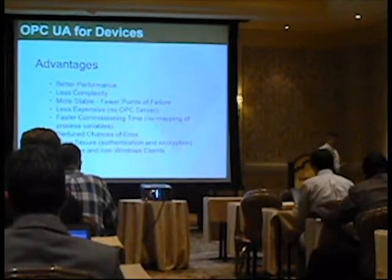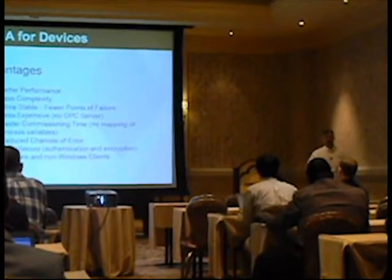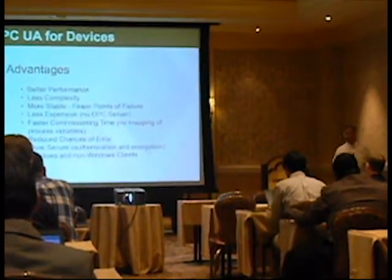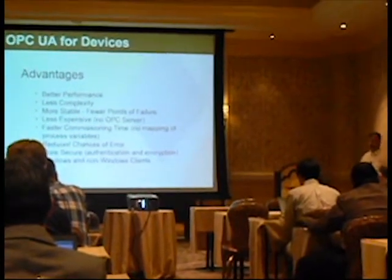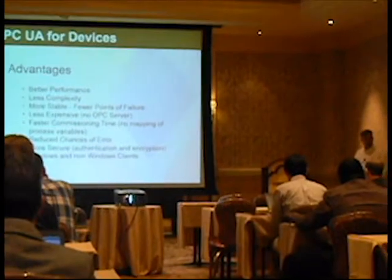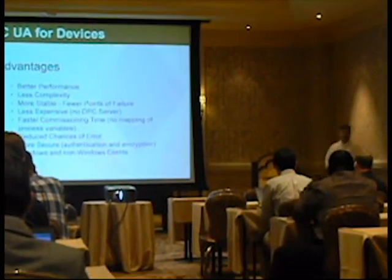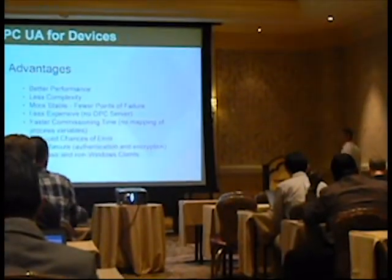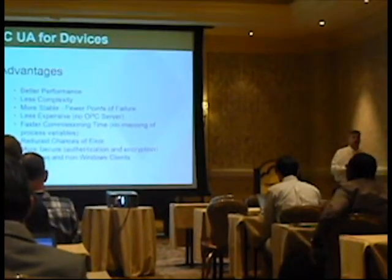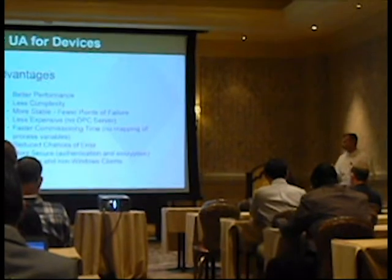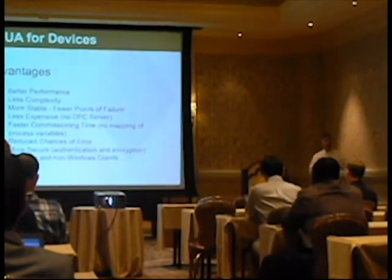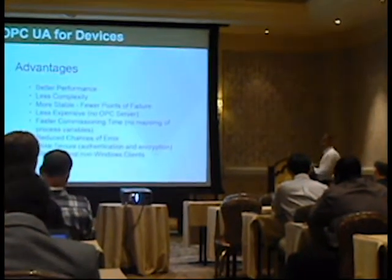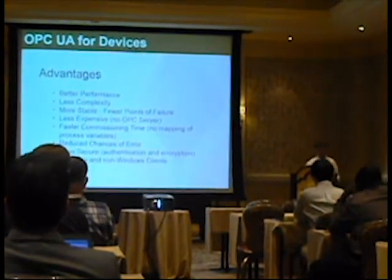Having an OPC UA server on the hardware gets rid of some software — we don't need the OPC server anymore, we don't need proprietary drivers. As soon as there's less software, a bunch of things jump out at you: you're going to get better performance, there's less complexity, there are fewer points of failure, and you're going to have a more stable system. It's less expensive — you don't have to go buy an OPC server, and with fewer pieces of software to configure, it's cheaper to deploy. The systems we end up with are also more secure. The OPC UA server talks encrypted to the clients, and to communicate with it, you need to authenticate yourself. And of course, OPC UA runs on Windows and non-Windows platforms.